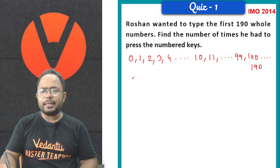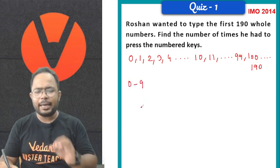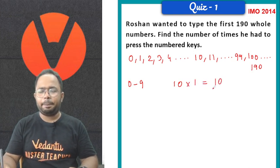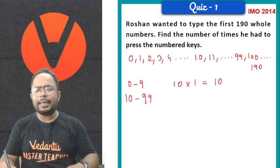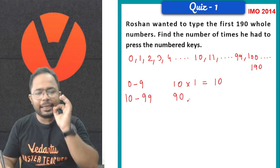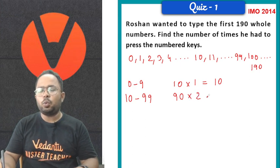If we press 0 to 9, we get 10 numbers. 10 numbers are there and we are pressing only 1. So, 10 into 1 is 10. Similarly, from 10 to 99, we are getting 90 numbers. And on 90 numbers for type, we have to press 2 times. So, 90 numbers, 2 times pressing, it becomes 180.